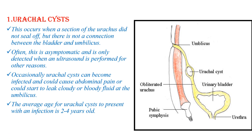The first one is urachal cyst. Urachal cyst occurs when a section of the urachus did not seal off, but there is no connection between the bladder and the umbilicus. Often this is asymptomatic and is only detected when an ultrasound is performed for other reasons, because it is not connected to either the bladder or the umbilicus. Occasionally, a urachal cyst can become infected and could cause abdominal pain or could start to leak cloudy or bloody fluid at the umbilicus. The average age for a urachal cyst to present with an infection is 2–4 years old.